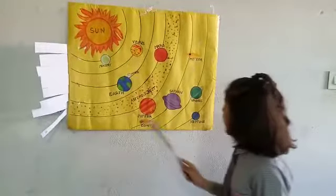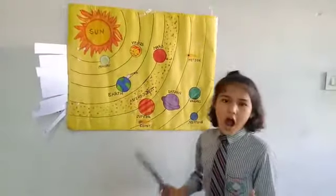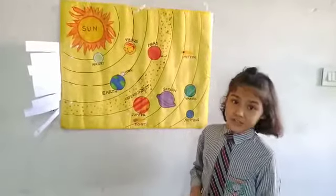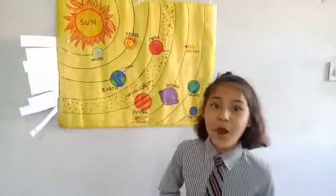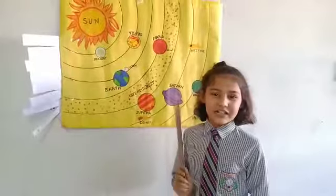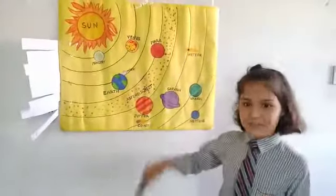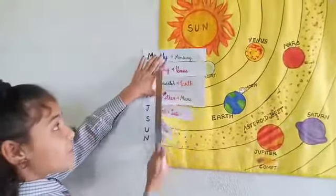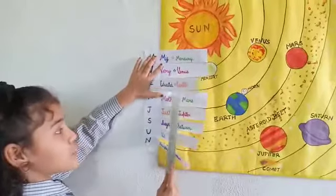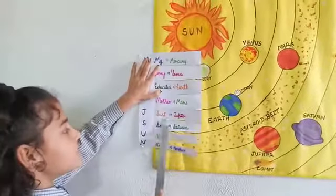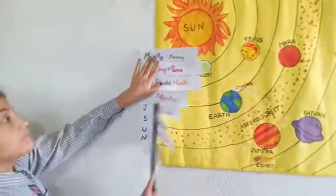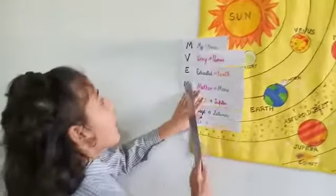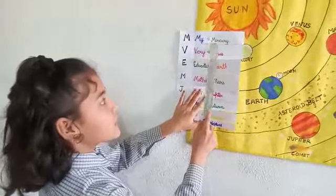Now, what is a planet and how do we learn the planet names? I will give you a magic trick to learn them. The magic trick is: 'My Very Educated Mother Just Says Us Naughty.' M for My — M for Mercury; V for Very — V for Venus; E for Educated — E for Earth.